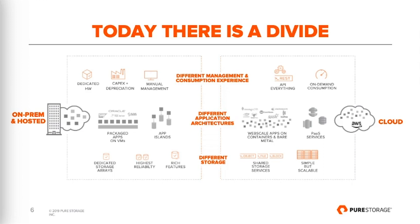When we looked at what our on-prem customers are trying to do in the cloud, we found a cloud divide. On-prem, customers successfully deploy VMware environments, SAP, Oracle, and SQL on a Flash Array. In the cloud, more web-scale-like applications and containers are deployed. On-prem, you get dedicated storage appliances with high availability, resiliency, and great performance with storage efficiencies and advanced data services. In the cloud, you have simple scalable shared storage across object, file, and block — but it's missing many features customers have come to expect on-prem.